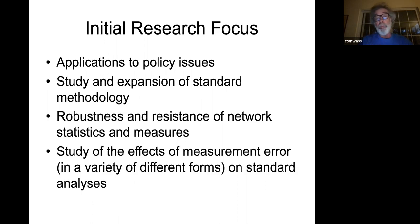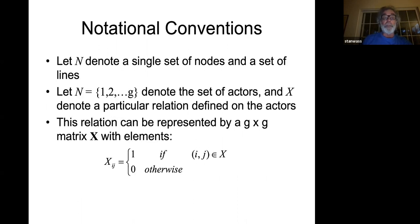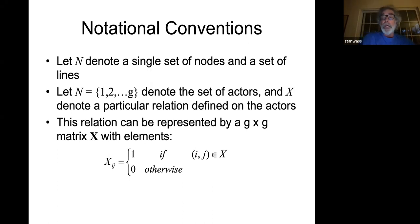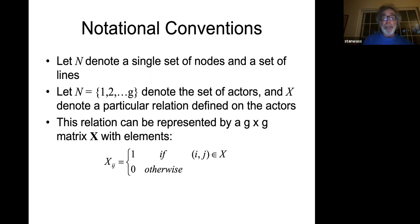We're studying the effects of measurement error in a variety of different forms on standard analyses — that's the direction this research initially was headed in. We've done more work although I'm not going to report on it today, and none of this has really been written up yet except for the initial work done about 10 years ago. First of all, I need this in order to talk about distributions that I'm going to use to study networks. I'm going to let capital N denote a single set of nodes and a set of lines. I'm going to assume you all know something about networks — I'm not going to spend a lot of time on notation.